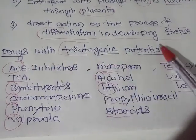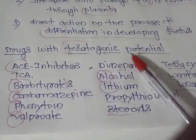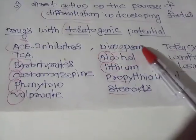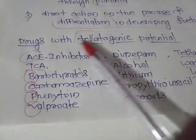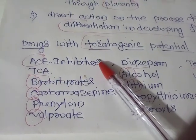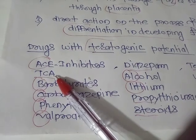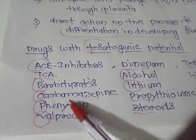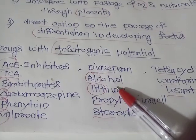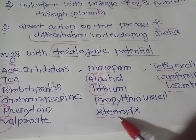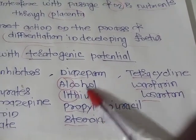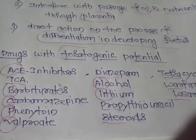Almost all drugs are not safe in pregnancy — not a single drug is completely safe. Drugs with teratogenic potential include ACE inhibitors, tricyclic antidepressants, barbiturates, carbamazepine, phenytoin, and valproates (anti-epileptic drugs), diazepam, alcohol, lithium, propylthiouracil, steroids, tetracycline, warfarin, and losartan.